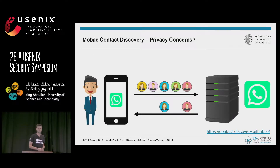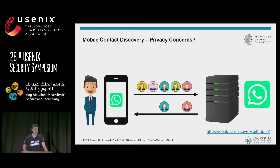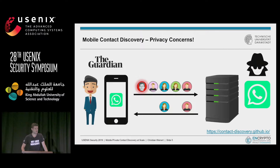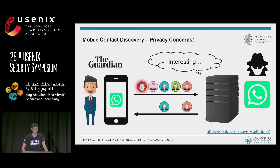Regarding privacy concerns in mobile contact discovery, the trivial procedure I outlined basically leaks your entire social graph. You might say, who cares, I'm just a boring PhD student, but imagine for example you're a journalist interacting with confidential sources and impactful whistleblowers. The service provider or any kind of agency monitoring that service might find such information very interesting, to say the least.